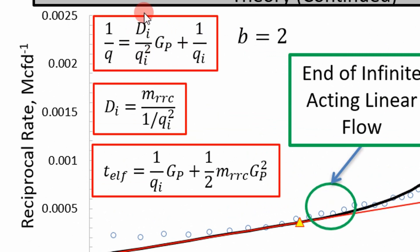And so you can see here you have constants here. You have the initial decline over the initial rate squared. And then you have 1 over the initial rate. So this is your intercept and this is your slope. And so you can see this is a constant. This is a constant. Your cumulative production is going to change as you produce.